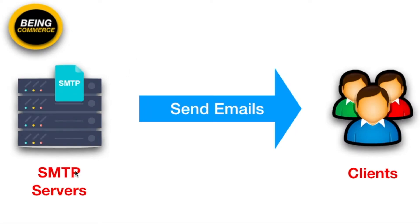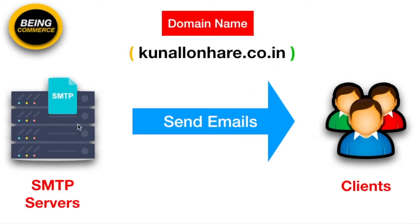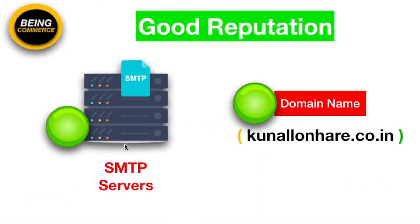As you all know, there is one SMTP server, and with the help of that SMTP server we can send emails to our clients or customers. These SMTP servers can be Amazon SES, SendGrid, or you can even have your own SMTP server. This SMTP server uses one domain name to send emails — in my case, kunallunare.co.in.